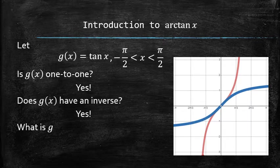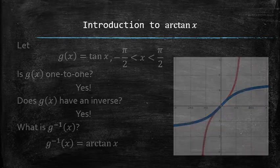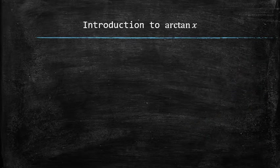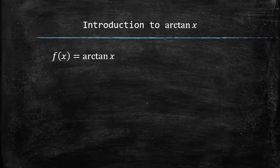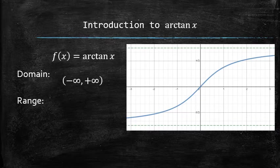What is this function? This function is not any of the functions that we already know, so we give it a name: the arctangent of x. Let's take a look at this new function and its graph. The domain of this function is from negative infinity to positive infinity, and the range of this function is from -π/2 to π/2, not including the boundaries.